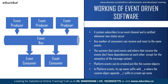So how does this work? First, a system subscribes to an event channel and is notified whenever new events occur — this system is called the event subscriber. Any number of consumers can receive and react to the same events. It's similar to a YouTube channel: when you subscribe, you get notified when a video is uploaded. Same way, when an event occurs, systems that have subscribed obtain the information and can react to it in near real-time. The sender of the event message is called the publisher, and the publisher and subscribers don't have dependencies on each other except for the semantic content of the message.